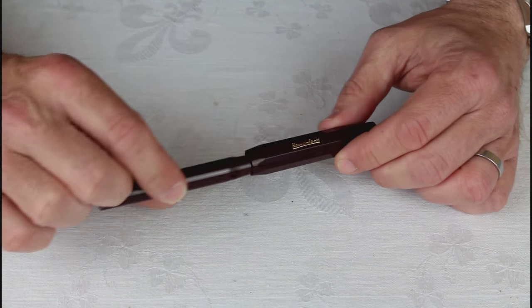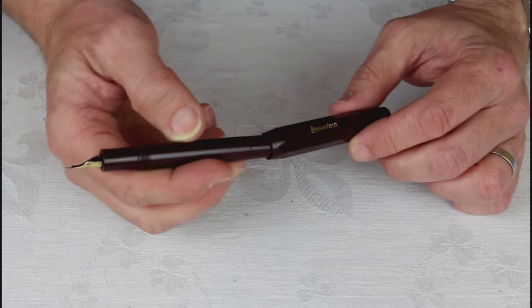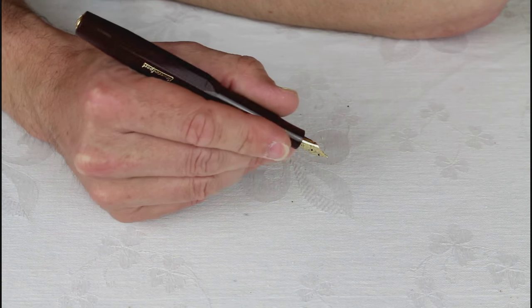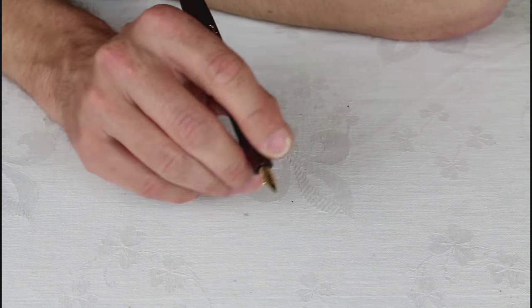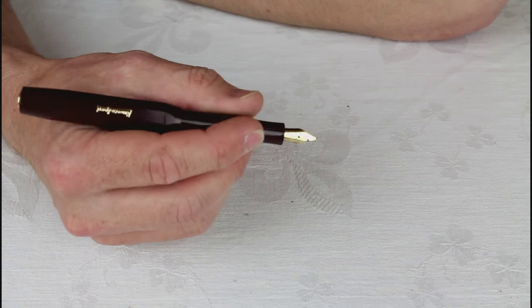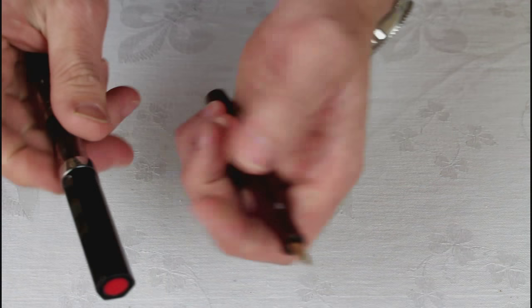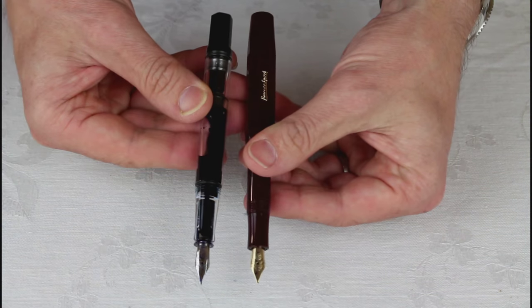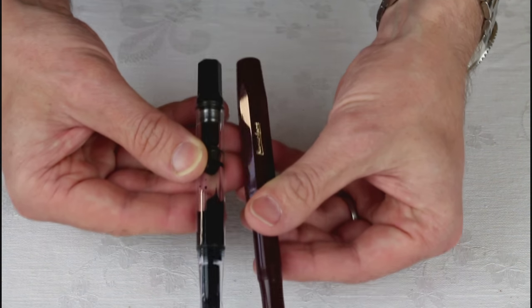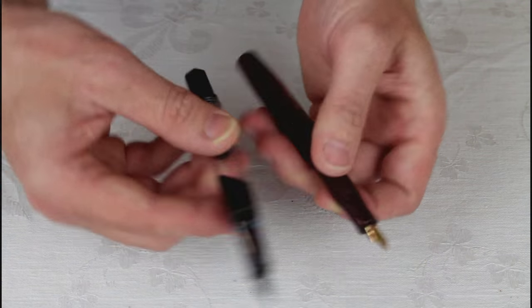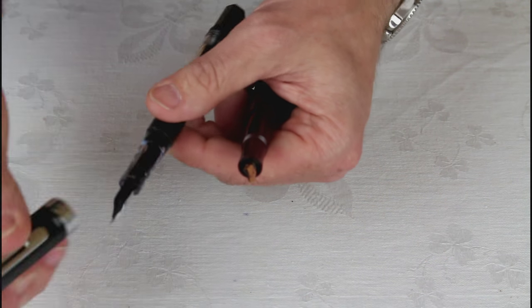It works by basically undoing the top there and using the cap to post, making it a very nicely sized pen. I'll take the cap off the Twsbi there just to do a quick comparison. It turns it into a legitimately full sized pen. The Twsbi is by no means small.